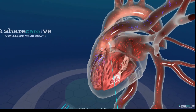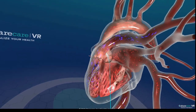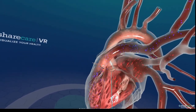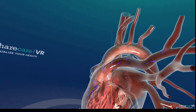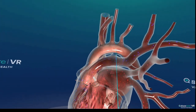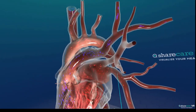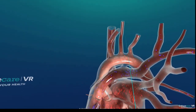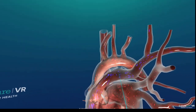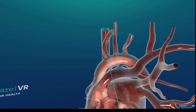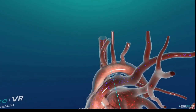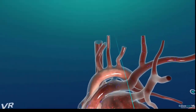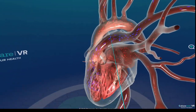From the left ventricle, blood goes through the aortic valve, up through the ascending aorta, the aortic arch, and the descending aorta. Along the aortic arch it branches into the brachiocephalic artery, the left common carotid artery, and the left subclavian artery.